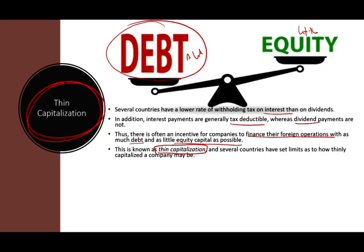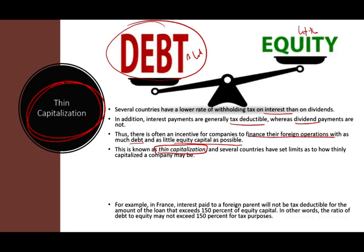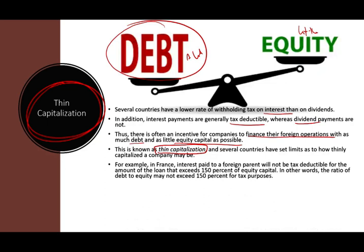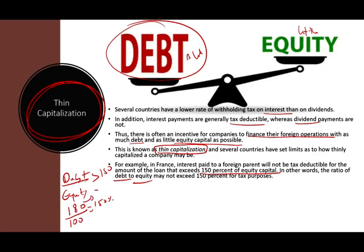In France, interest paid to a foreign parent will not be tax deductible for the amount of the loan that exceeds 150% of equity capital. Simply put, the debt-to-equity ratio cannot exceed 150%. If you have $150 in debt, you must have $100 in equity. If you have $180 in debt and $100 in equity, that additional $30 — you cannot deduct the interest on it. You can only deduct interest up to 150% debt-to-equity.